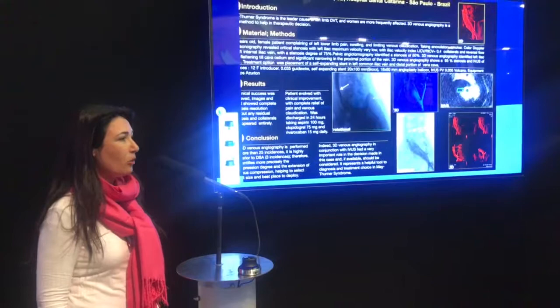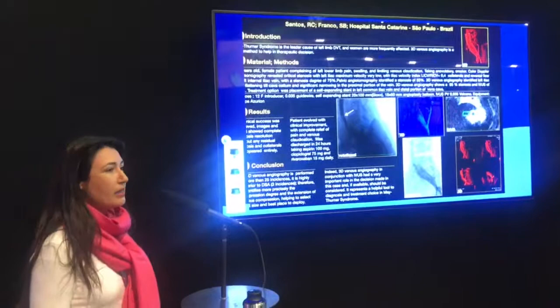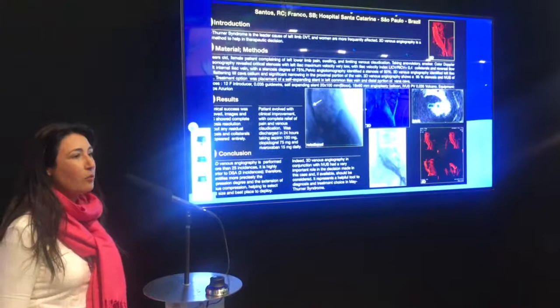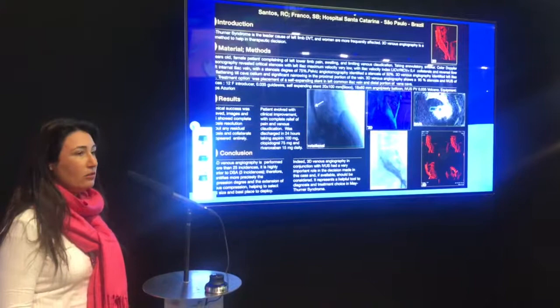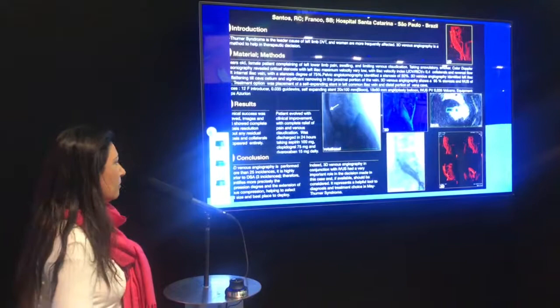In conclusion, 3D venous angiography was performed in 25 incidences, showing a more precise image, which helps to choose stent size and deployment. In this particular case, 3D venous angiography combined with IVUS had an important role in the decision on where to place the stent and which size to use. If available, it should be used to treat May-Thurner syndrome cases.